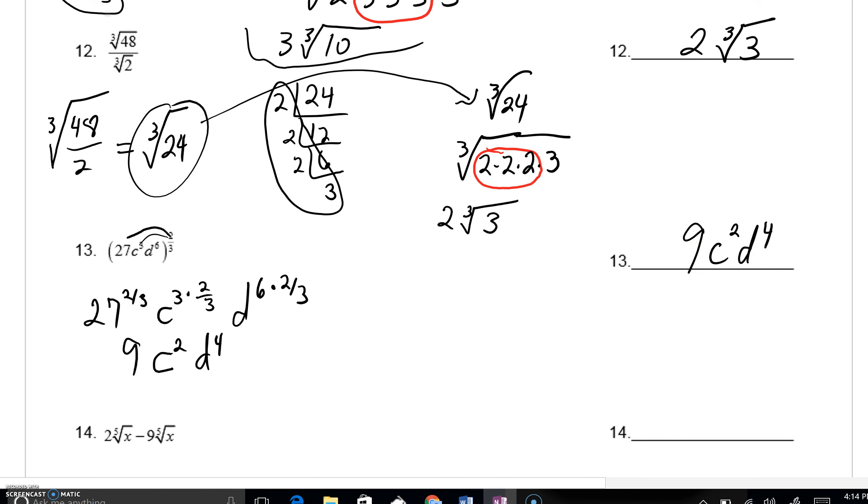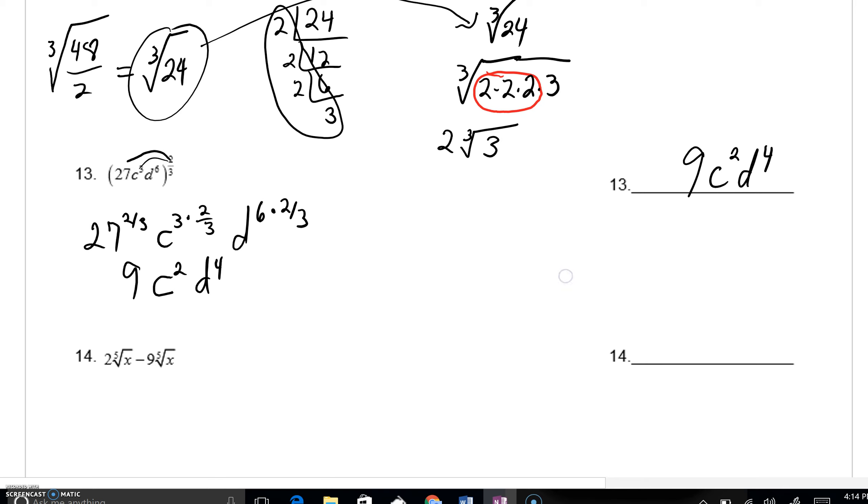Last one on this video. We have 2 fifth root of X minus 9 fifth root of X. These are like terms, and it's kind of just combining the 2 minus 9. 2 minus 9, you get negative 7. Keep that fifth root of X. Fifth root of X won't simplify. Plain and simply, we're done.